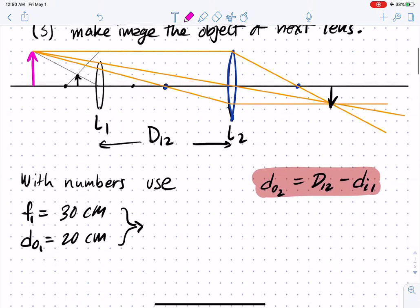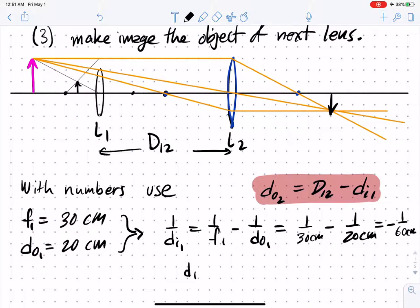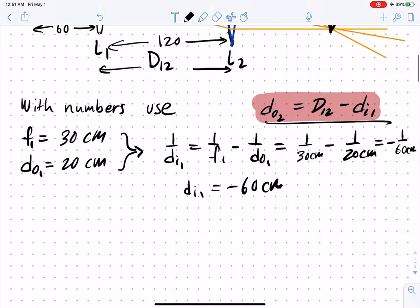Let's go ahead and do this algebraically. We use the thin lens equation to find the first image. We find that the image distance is negative 60, which is what you can see here. It's negative because it's going backwards in the direction that it came. The separation here is 120, so using this equation now we can find the next object.